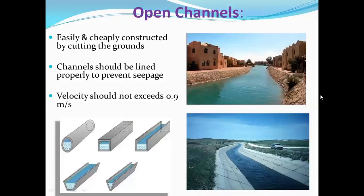Open channel: it is easily and cheaply constructed by cutting the ground. In the figures you can see the different types of channels — a lined channel and an unlined channel. Very little seepage will occur in the lined channel, but evaporation losses are invariably present. These are the different cross sections: circular, rectangular, and triangular.